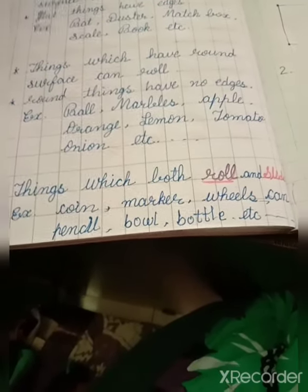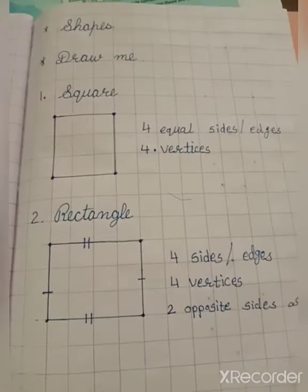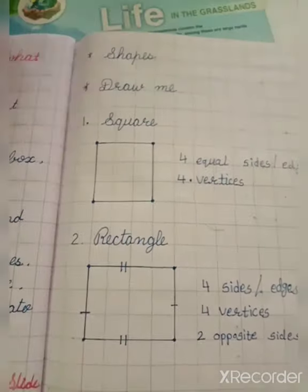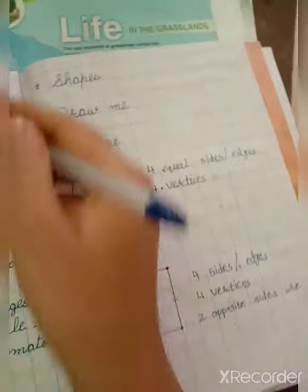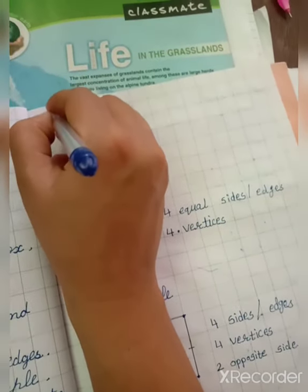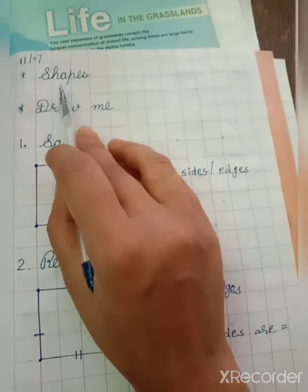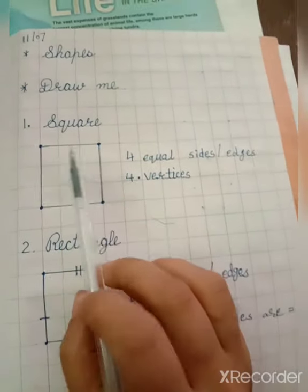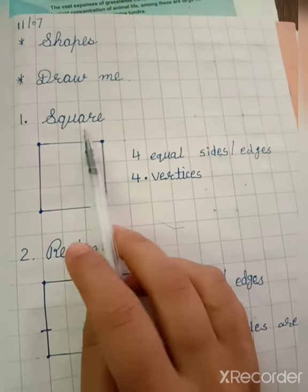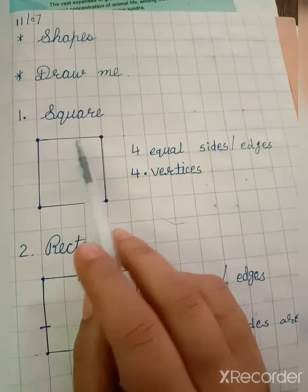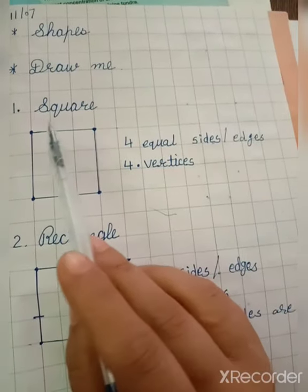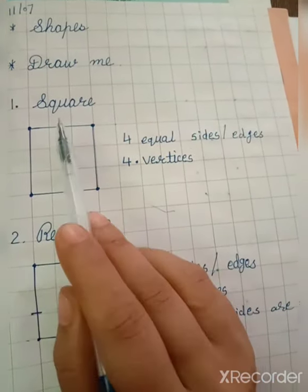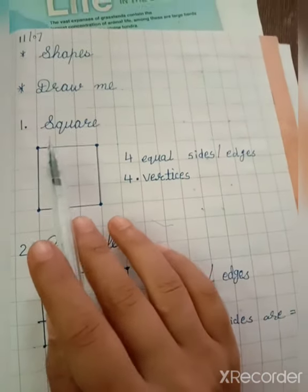We have also written examples in our CW book. So you will write today's date — 11 oblate 7 — and then you will write the heading of today's work: Shapes. Now draw the heading and we'll begin with the shapes.